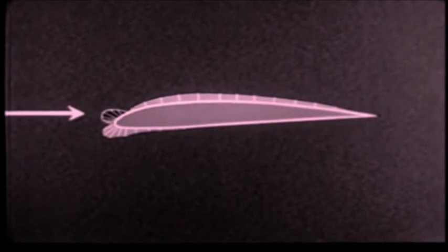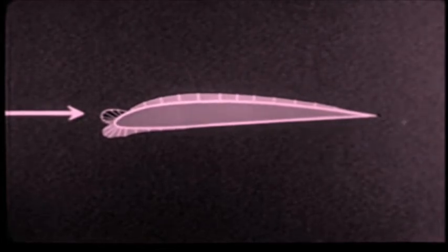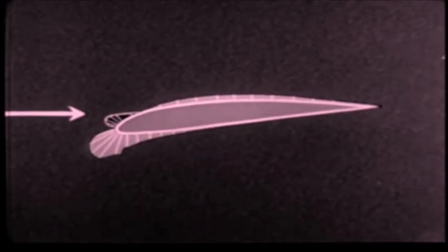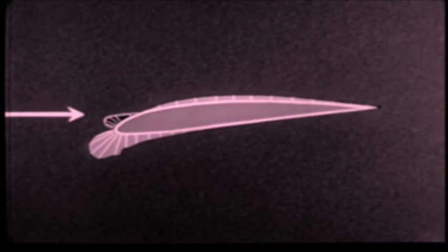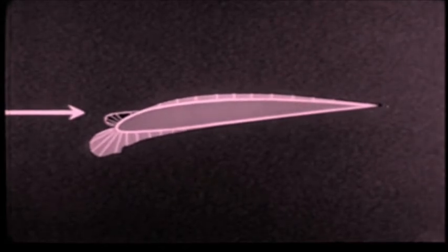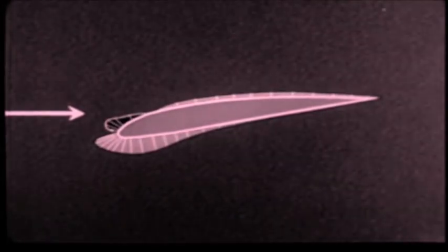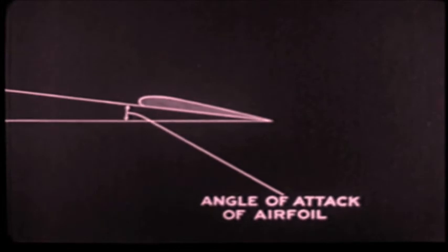From zero degrees, the angle is decreased to a slight negative value. The positive pressure bulb on the leading edge is practically unchanged. The negative pressure on the upper surface of the wing shows little change. However, the negative pressures along the lower surface begin to increase at the leading edge. Further increases in this area, accompanied by very slight changes in the positive pressure bulb, are the only differences which are readily observable as the angle of attack is further decreased.